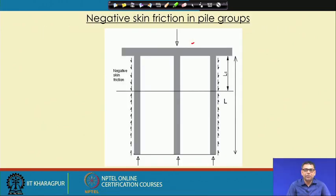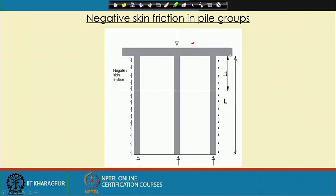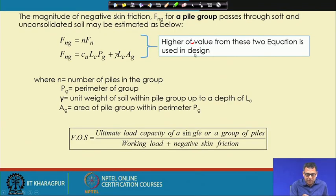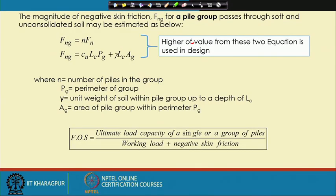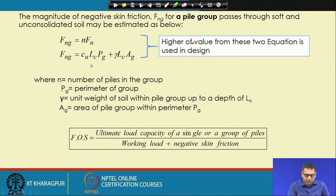The previous calculation is for a single pile. For a group pile in clay, we consider it in two ways: one for single pile consideration and another for block failure consideration. For single pile calculation, you calculate the negative skin friction developed for the single pile and then multiply by the number of piles. For block failure, we consider the negative skin friction surrounding that block.